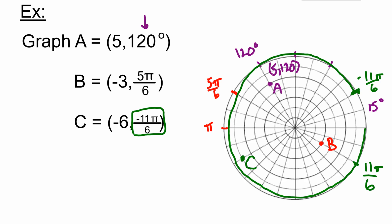Pretty basic. You just find the angle, then go out how far with the radius, and you've got your points.